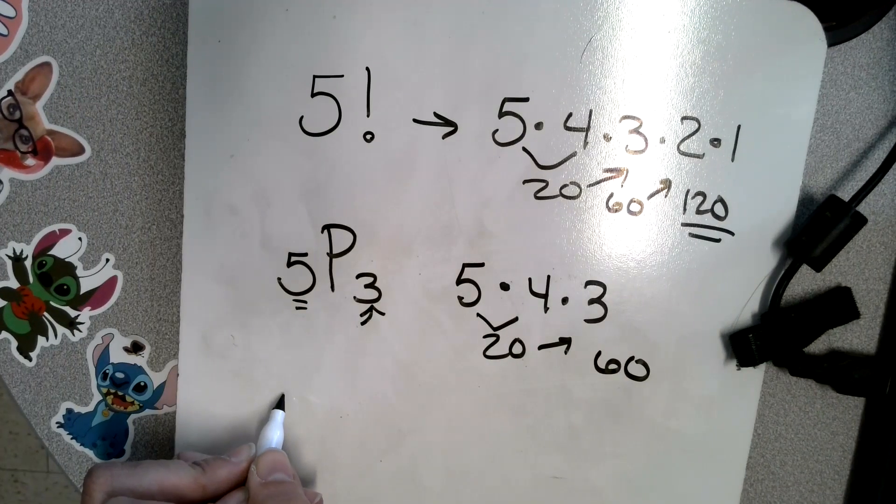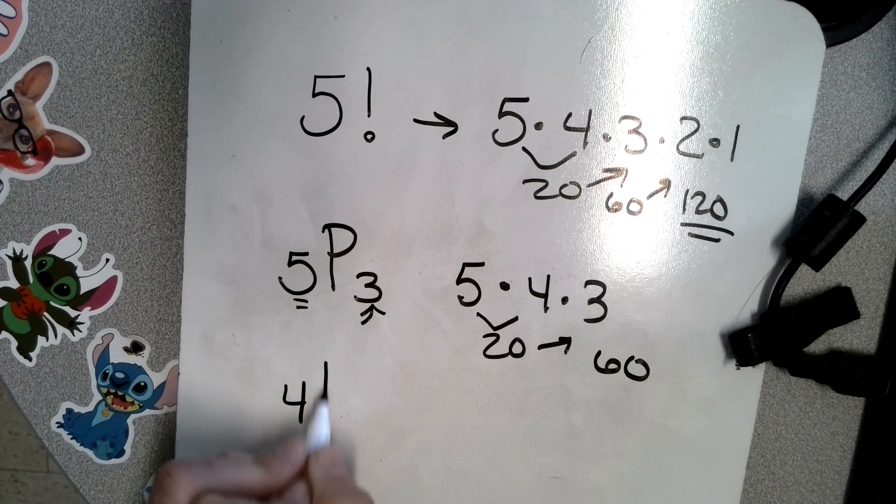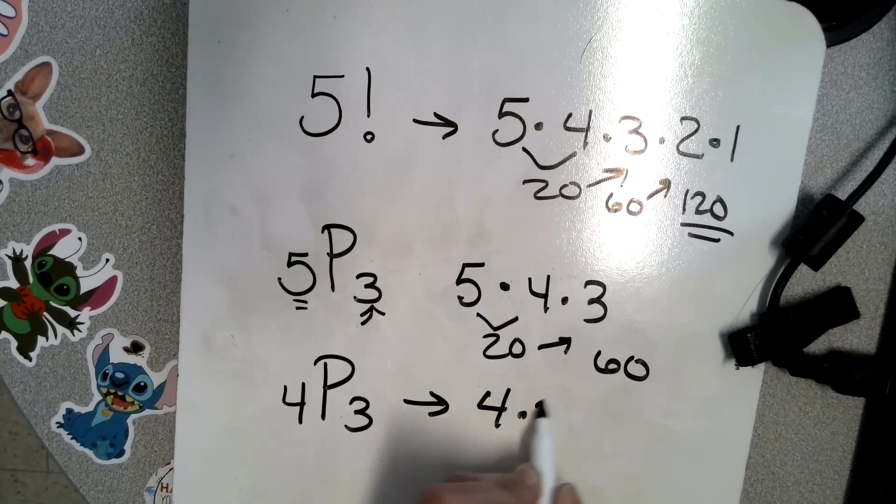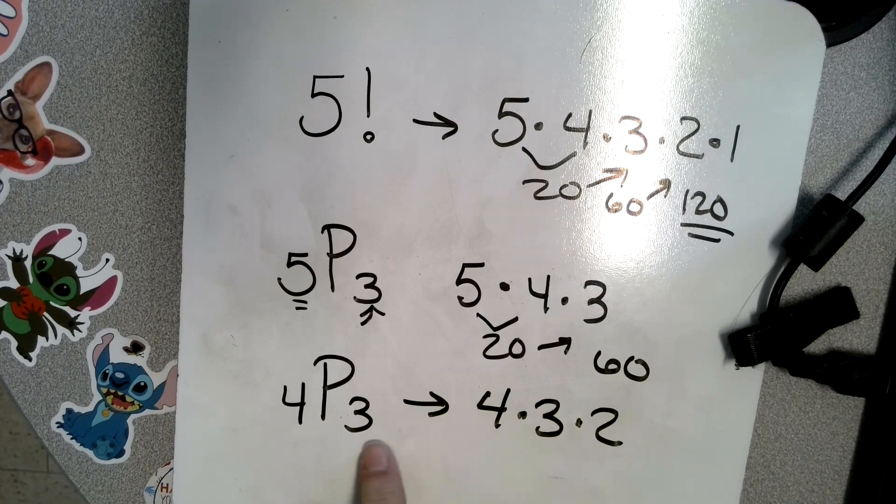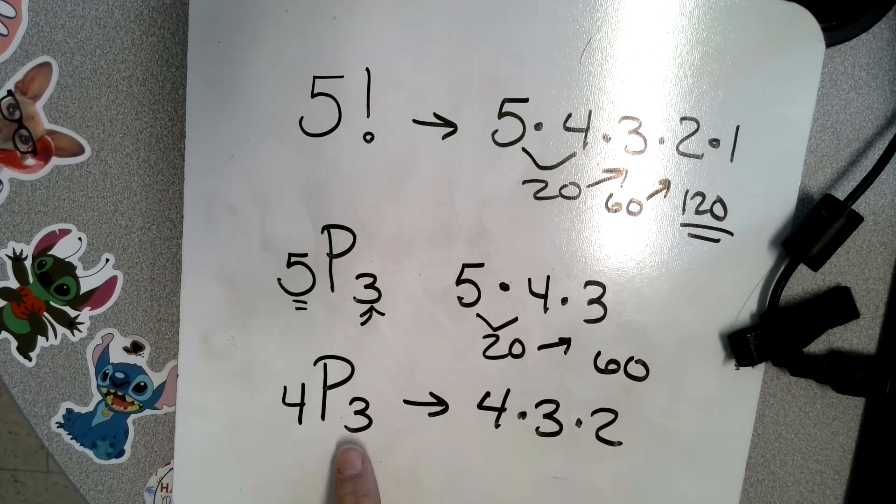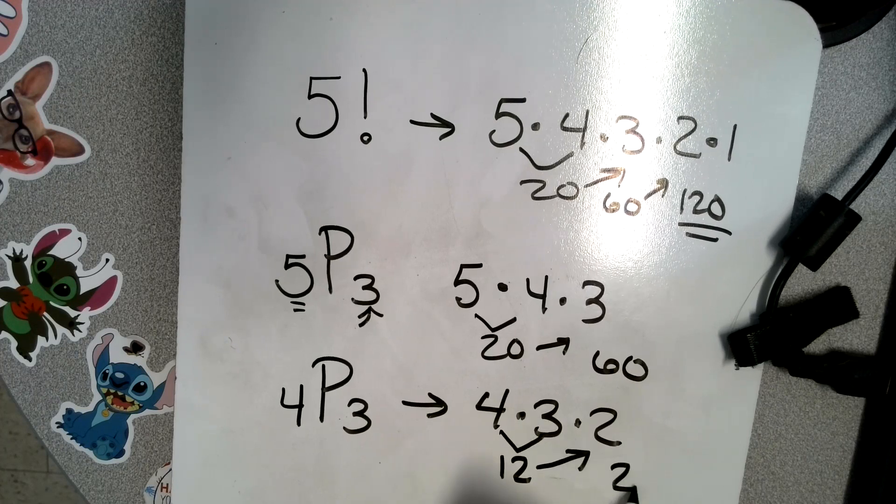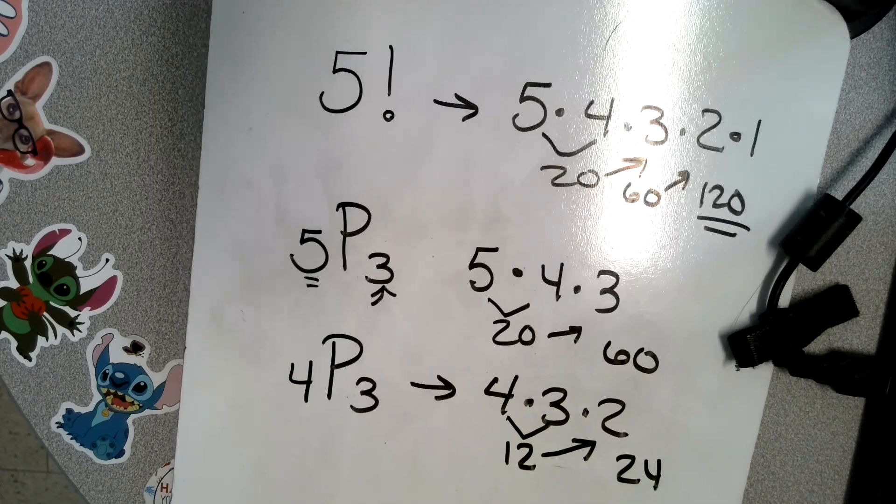Another way of looking at that, we could say four things taken three at a time. So we'd start with the four, and we go three numbers out. Notice how this doesn't mean where we end, it means how many digits we write. So four times three was 12, 12 times two, which was 24.